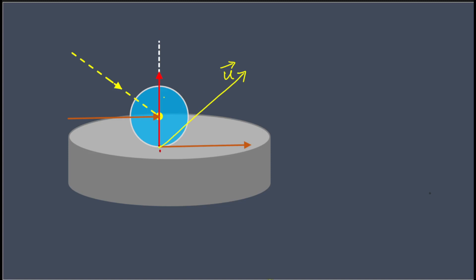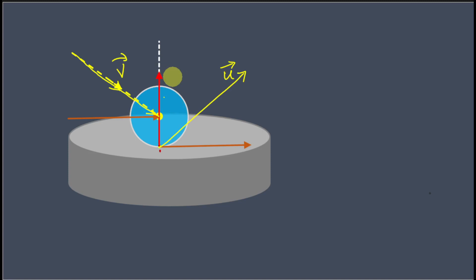Now let's come to the velocity of the ball. Let's say the ball was moving in this direction — this vector is v, the velocity of the ball before the collision. What I am going to prove is that this v vector, this u vector, and the normal are three lines, and given the conditions, these three lines must be coplanar.